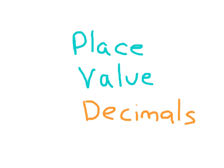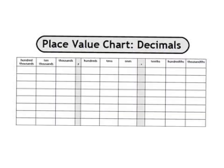Let's take a look at place value with decimals. Here I have a place value chart for decimals. If I had the number 32.762, and the way that we would read that is 32.762, we put that right into our place value chart here, just so that you can see that there is the tens place.